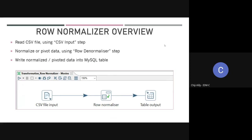Just like we denormalize the data, you can do the same thing in the other direction — you can also normalize data. You can have a denormalized dataset and normalize it to present in a normalized fashion. For example, let's say you have a manual data source — data that's been manually gathered in a Google Sheet — and you decide you want to import this data into a database because you have a Tableau dashboard sourcing from that database.